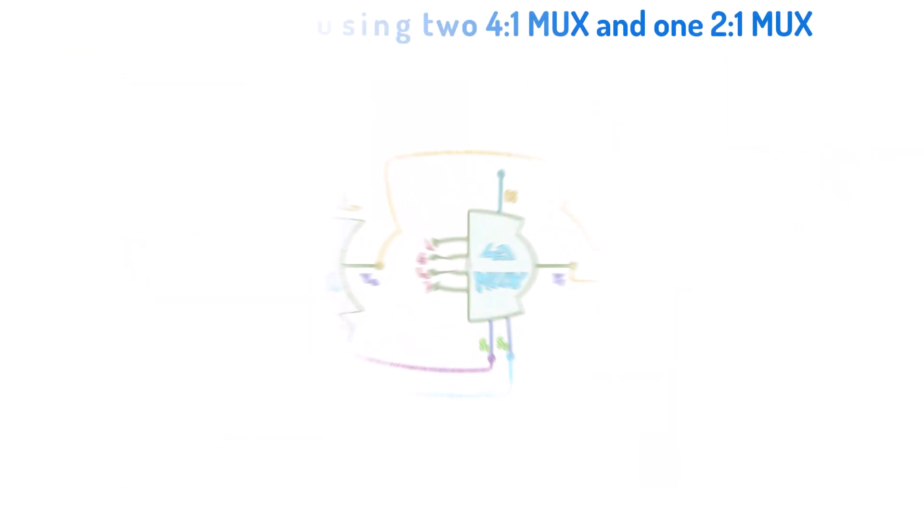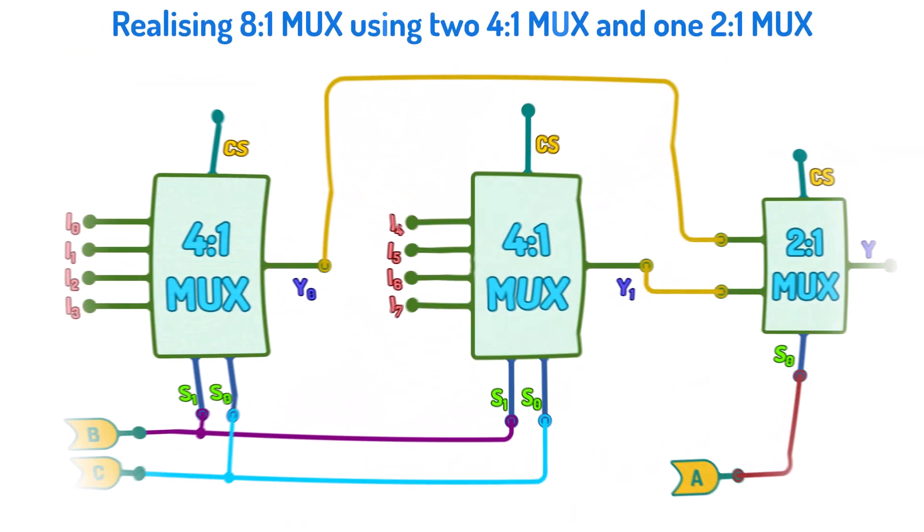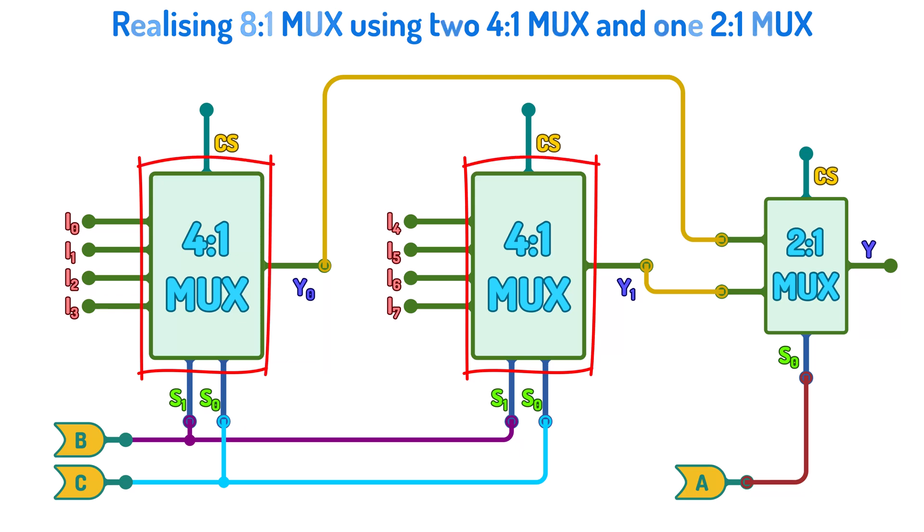There is one more way to create 8-to-1 multiplexers using two 4-to-1 multiplexers, but it requires one more 2-to-1 multiplexer. This is the circuit diagram for the setup. Here, B and C are connected to both the 4-to-1 multiplexer. Line A controls the 2-to-1 multiplexer.